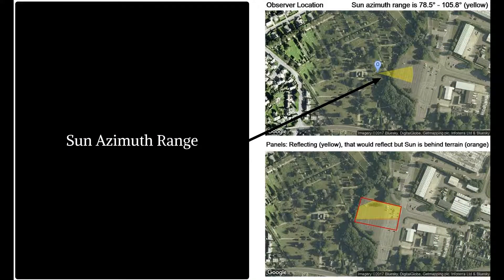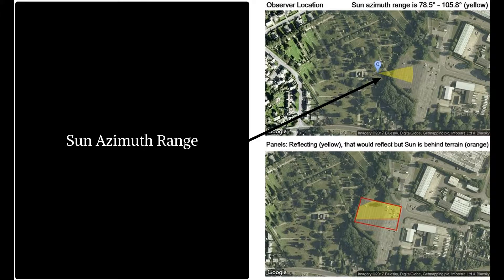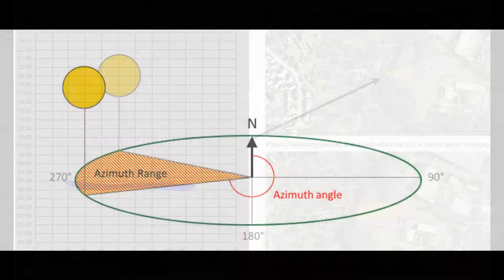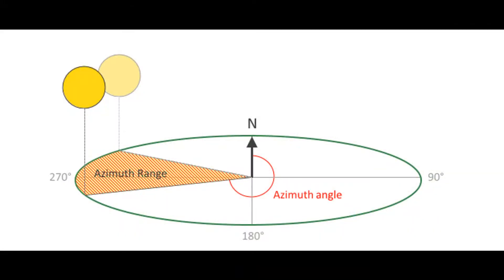The top right figure shows the sun's azimuth range and the receptor location. The yellow segment of the pie shows the position of the sun on the horizon relative to north during the time when glint and glare effects are possible towards the assessed receptor. An illustration of this is shown on the current slide.